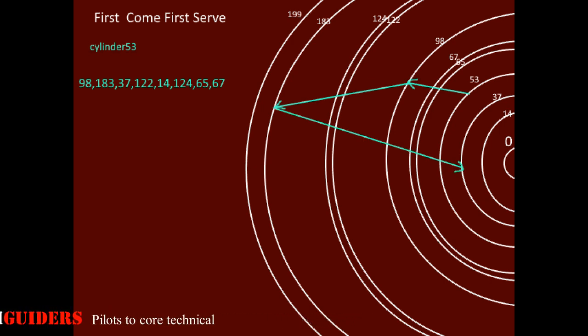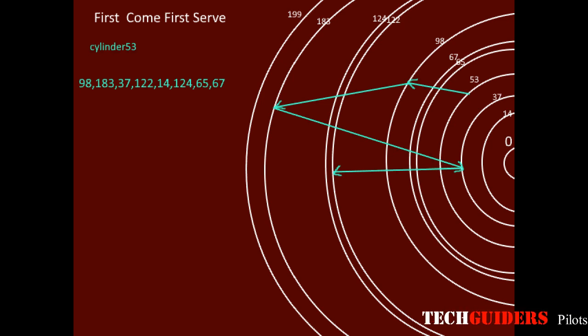Then the head changes its direction and moves in towards the spindle and reaches cylinder number 37. Again head changes its direction and moves outwards from the spindle to access the data on cylinder number 122, then to 14, then 124, then 65, finally 67.